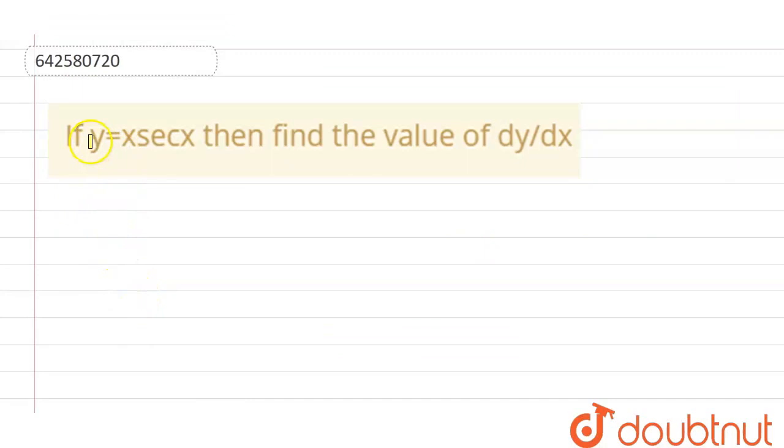So, let's start with this question. We have the question in which we have y equal to x secant x, then find the value of dy divided by dx. Now, we can start with the given y. The value of y equal to x into secant of x.